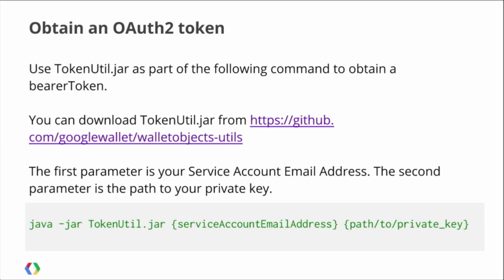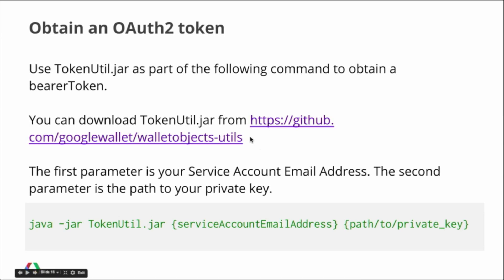So now let's try a demo to see how this works. The first thing we need to do is obtain an OAuth2 token. To do this, we provide a utility called tokenutil.jar. You can obtain this from GitHub at Google Wallet, WalletObjects, Utils — download the jar. Then run it using your service account email address and your private key. Once you run this, it will create a token that, like all access tokens, will expire in one hour.